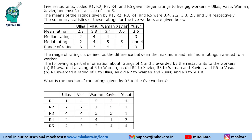What is the median of the ratings given by R3 to the 5 workers? R3's ratings are 4, 4, 5, 5, 1. Arranging in order: 1, 4, 4, 5, 5 — so the median rating is 4.